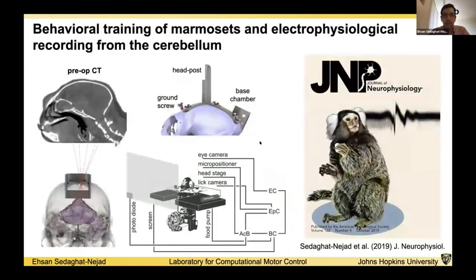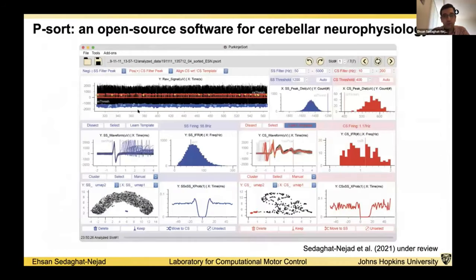In our lab, we develop protocols to work with marmoset monkeys, and we are using marmoset monkeys to study the cerebellum in general, and specifically Purkinje cells of the cerebellum and how they contribute to ongoing movement. We also developed a software package named PSORT to sort cerebellar neurophysiological data and specifically sort complex spikes of the Purkinje cells.